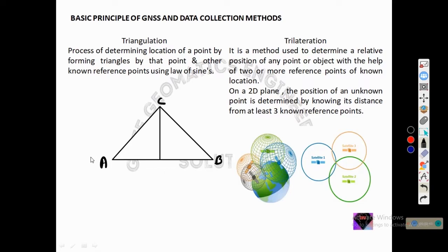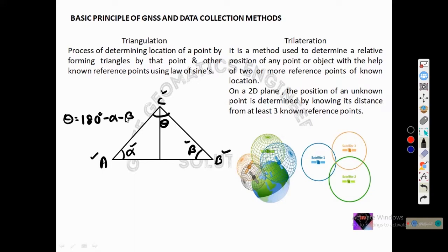We know points A and B, but point C is unknown to us and we have to find its position. Since we know points A and B, we can easily calculate angles alpha and beta — you will also see this in the surveying portion. If we know alpha and beta, then we can calculate angle theta using the equation: theta equals 180 degrees minus alpha minus beta.